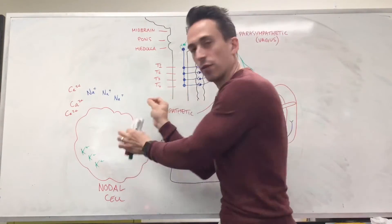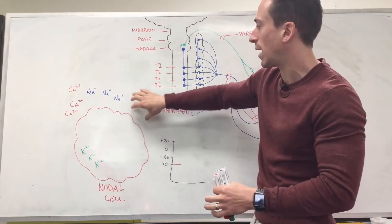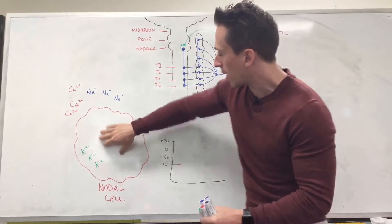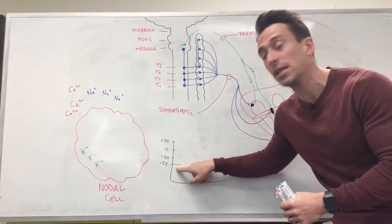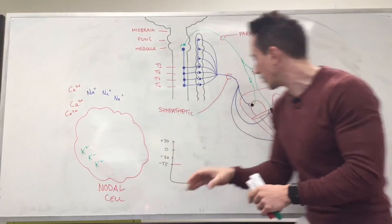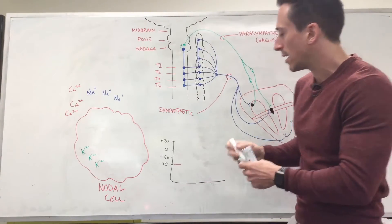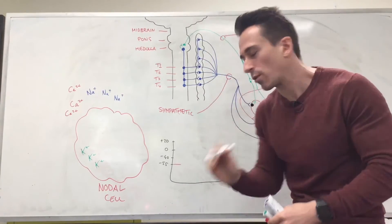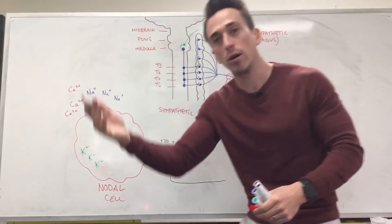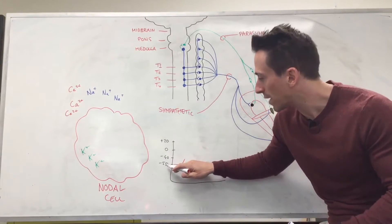If I were to measure the charge difference between outside and inside, we know inside is more negatively charged compared to outside. Inside is actually sitting at around negative 55 millivolts compared to outside. We know if we want these SA or AV nodes to send signals through the heart, they need to hit negative 40—that's the threshold. To go from negative 55 to negative 40, that's going more positive. Negative 55 is more negative than negative 40.